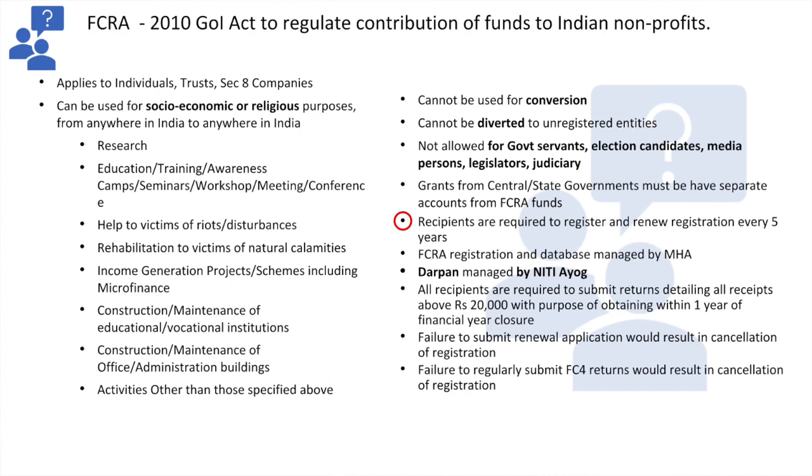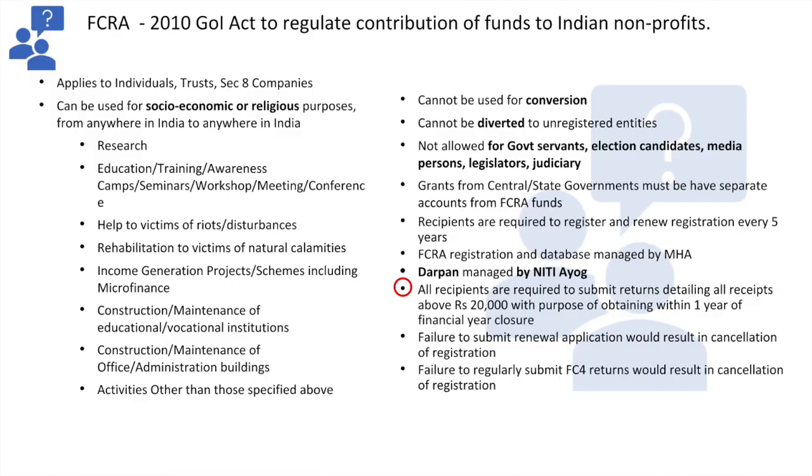There is a new portal managed by Niti Aayog called the Darpan portal, which is common to all NGOs whether or not they are accepting foreign contributions. They have to register themselves on the Darpan portal, though it has still not been made mandatory yet. You need to disclose only amounts received above 20,000 rupees in a year. If you have received more than 20,000 rupees from abroad, you are required to disclose the purpose for which you took that money and what purpose you spent it on.